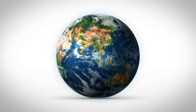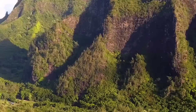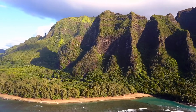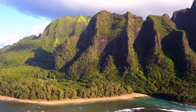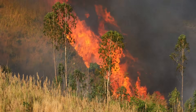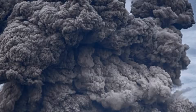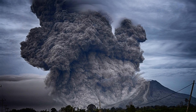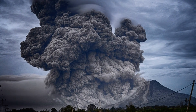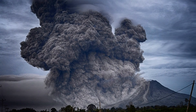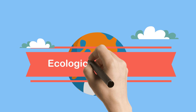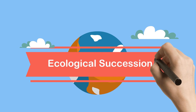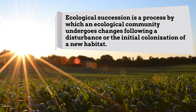Our world is constantly changing. New islands are being created, fires burn in forests, volcanoes explode and destroy areas. Nothing remains the same and habitats are constantly changing. Ecological succession is a process by which an ecological community undergoes changes following a disturbance or the initial colonization of a new habitat.